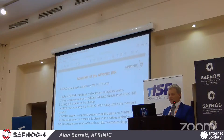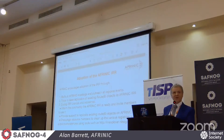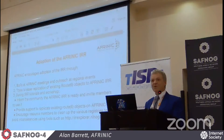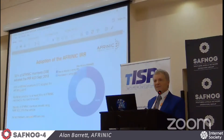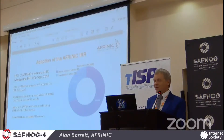Since we launched the AFRINIC routing registry, we've been encouraging our members to use it, and we can help members migrate their objects. If you have route objects or route6 objects in another routing registry, AFRINIC can help you migrate them to the AFRINIC routing registry. We do that through tutorials and one-on-one sessions, and you can send us an email asking for help. The uptake has been a little less than we hoped, but it's picked up very much recently. As of Thursday last week, about 32% of AFRINIC members have information stored in the AFRINIC routing registry, up by 10% from a month ago — we jumped from 23% up to 32%.